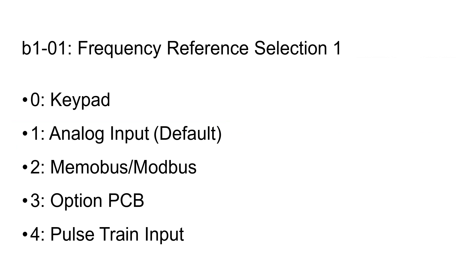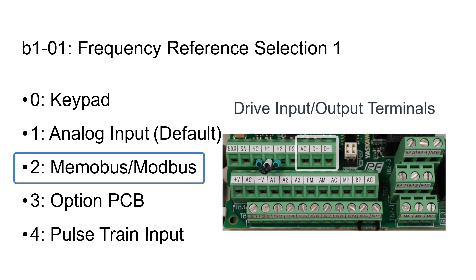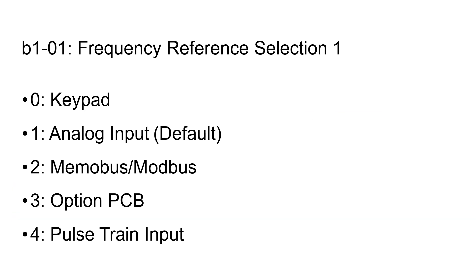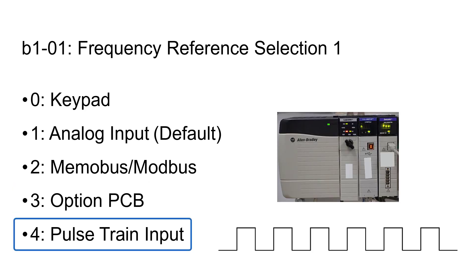Setting 2 uses MemoBus/ModBus. Setting 3 uses a communication option card, such as an Ethernet card. Setting 4 uses a pulse train input from a device such as a PLC.